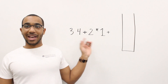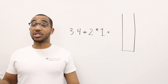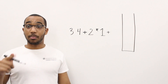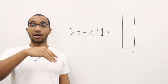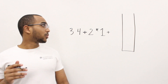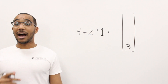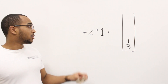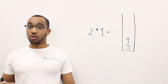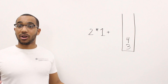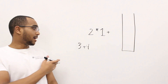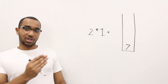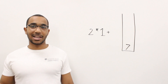So we have our expression and our stack. We're going to push our operands, and as soon as we see an operation, pop two items, evaluate, and push the result back on the stack. I see a three — push it. I see a four — push it. Then I see an operator, so I pop the four and the three, compute three plus four equals seven, and push seven onto the stack.